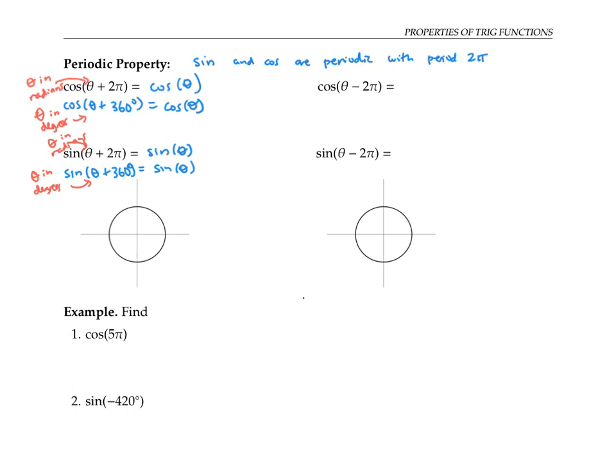We can see why this is true from the unit circle definition of sine and cosine. For angle theta, adding two pi adds a full turn around the unit circle. So we end up at the same place. Theta and theta plus two pi are just two different names for the same location on the unit circle, and since sine and cosine give you the y and x coordinates of that point, they have to have the same value.